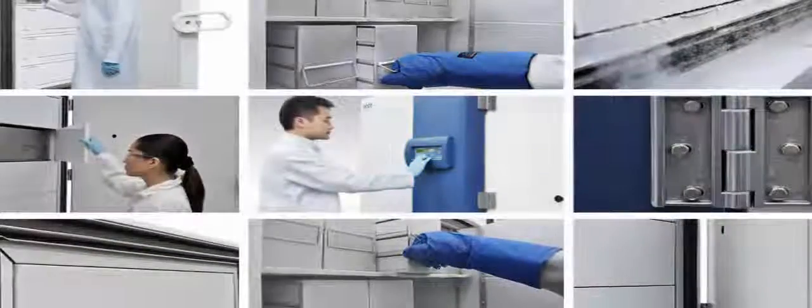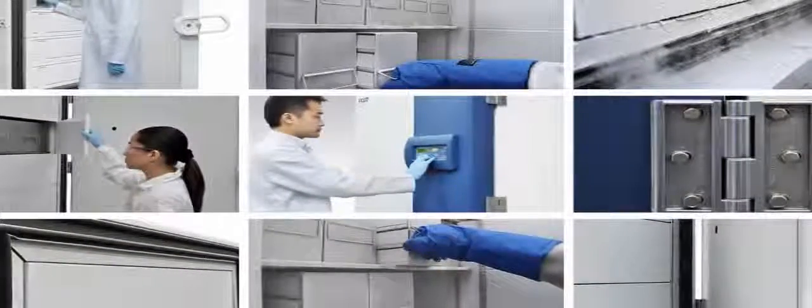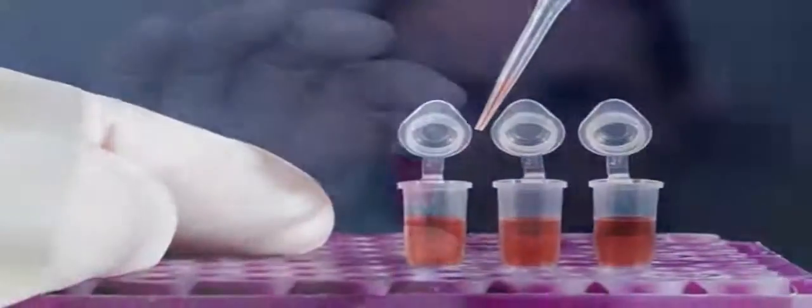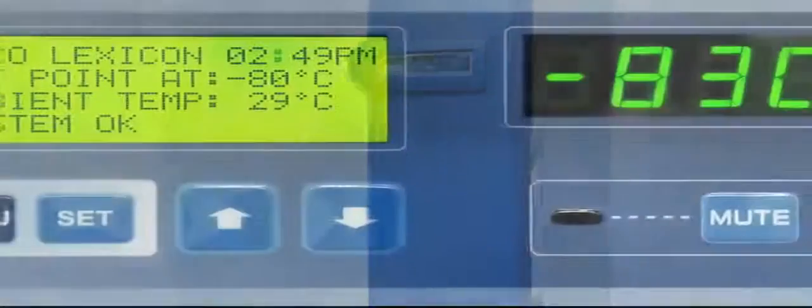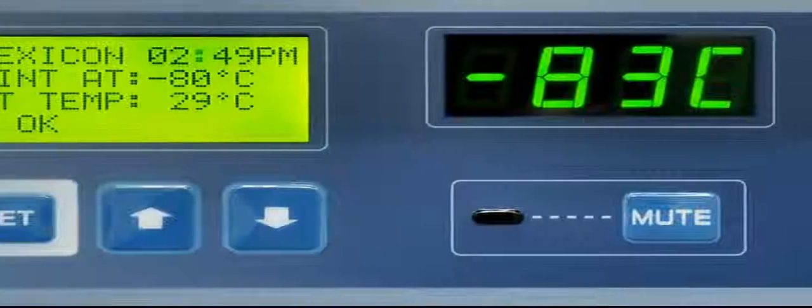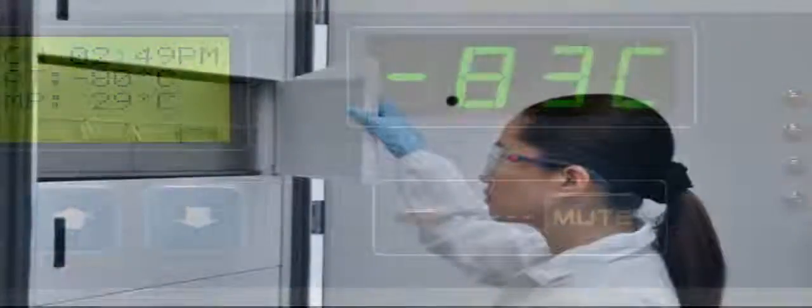ULT temperature freezers are widely used in scientific research for long-term storage of temperature sensitive biological samples, such as red cell samples and blood plasma. As ULT freezers are often operated at minus 80 degrees Celsius continuously for years, reliability is of paramount importance to researchers.